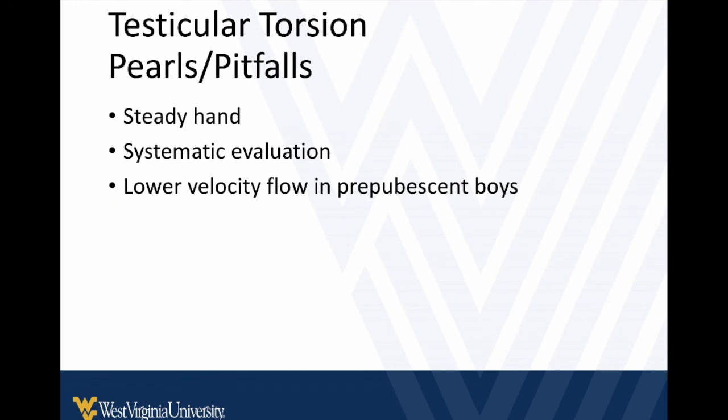That's the main emergent thing you're looking for. You may be called because the patient has pain or swelling, and you can quickly make sure the testicle looks okay, has flow, and that torsion looks unlikely. You really need a steady hand. Use the bed sheet, stabilize the scrotal sac, be systematic in your evaluation. Adjust your velocity scales — especially with a pediatric or prepubescent patient, velocities are going to be lower and you need to know how to adjust those. With that basic information and basic ultrasound skills, you should be able to answer a lot of bedside questions in a matter of minutes.